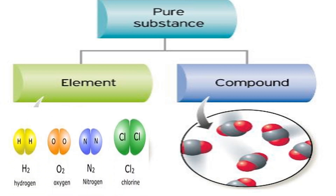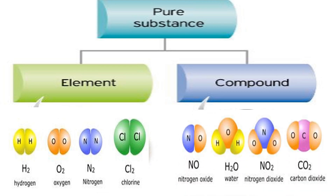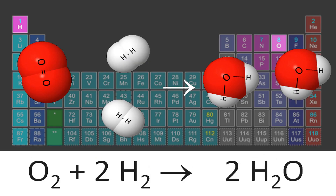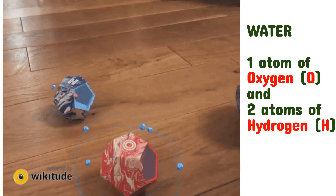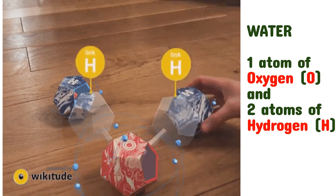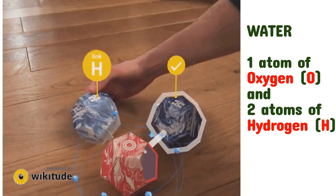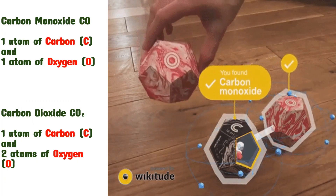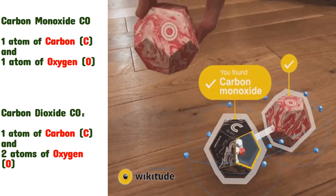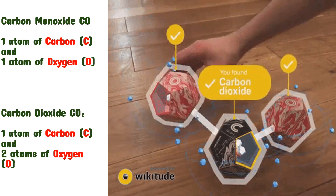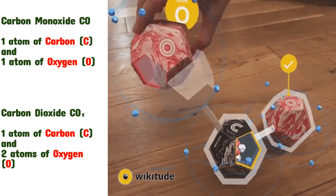Compounds are formed when molecules or atoms of different elements combine. Note, however, that the combination should involve a chemical reaction. If one molecule of oxygen chemically reacts with two molecules of hydrogen, it will form two compounds of water. The compound water is formed when one atom of oxygen and two atoms of hydrogen chemically combine. Notice how one atom of carbon and one atom of oxygen forms carbon monoxide, while one atom of carbon and two atoms of oxygen forms carbon dioxide.